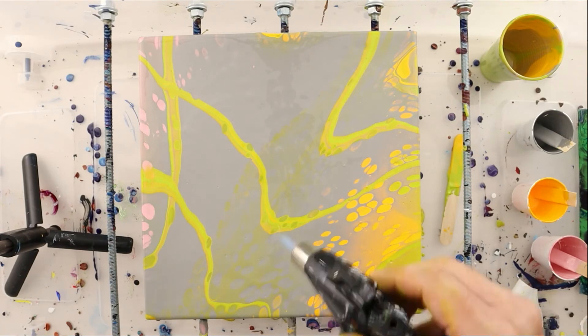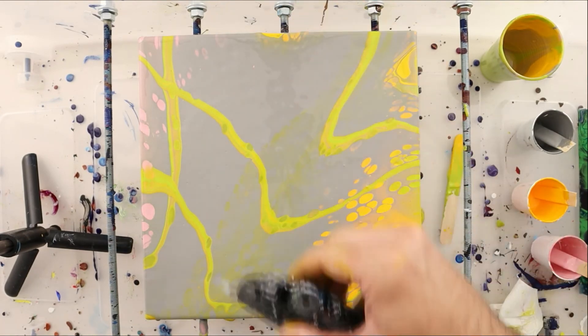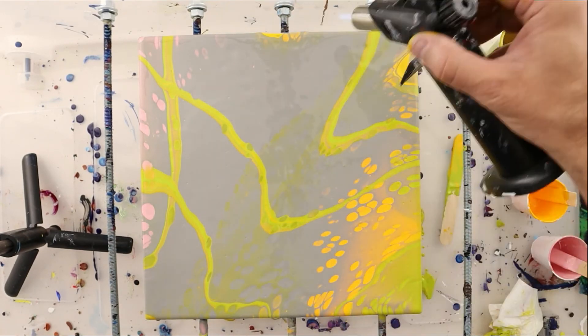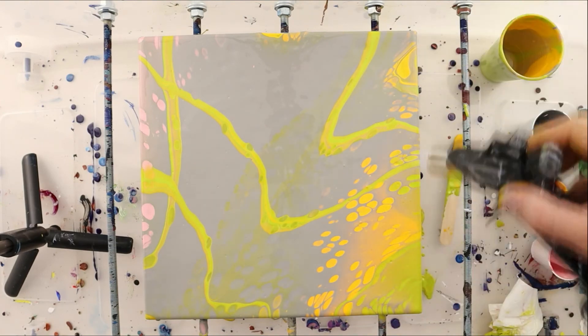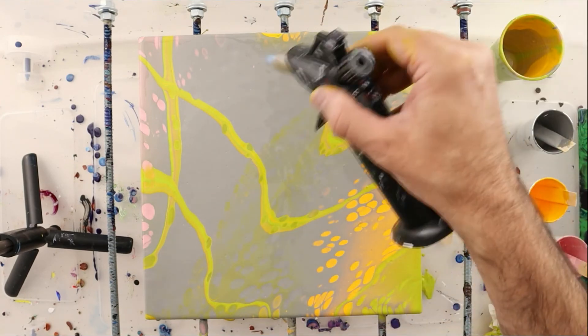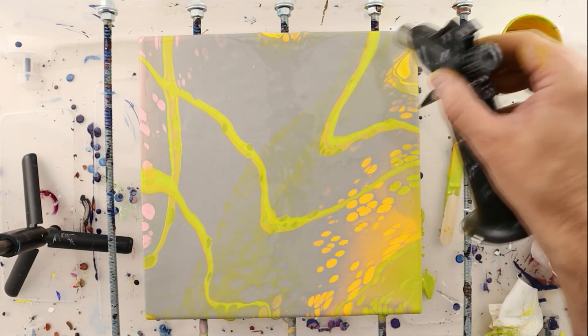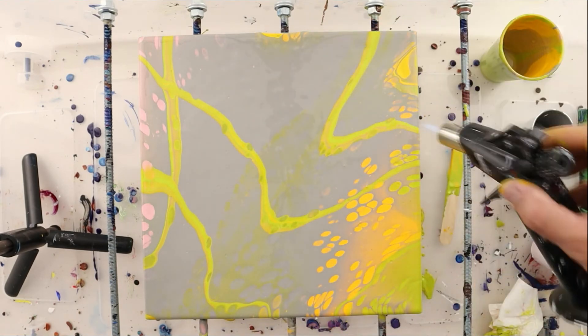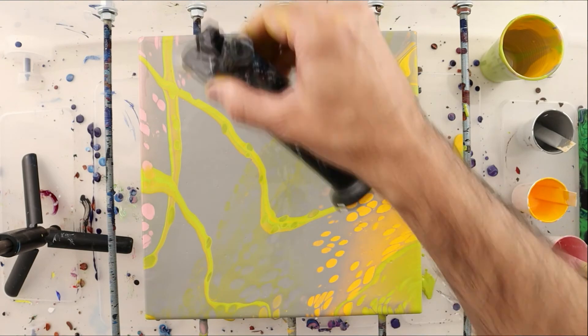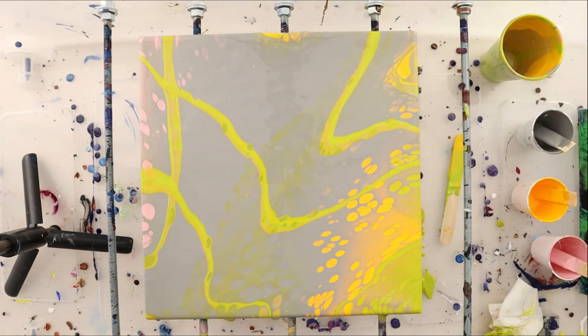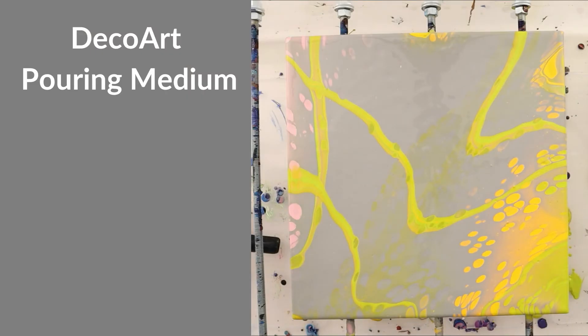Let's see if we can't bring up some of those silicone cells. Now if you notice, the cells that I got from torching early are much bigger because they kind of widened out and had some time to grow. Any cells that I get from a late torch are going to be much smaller.